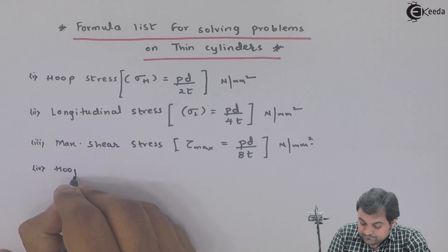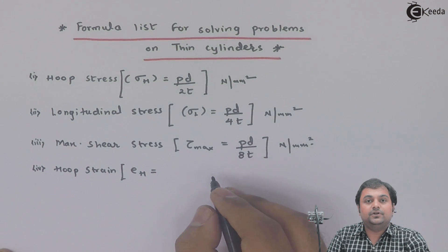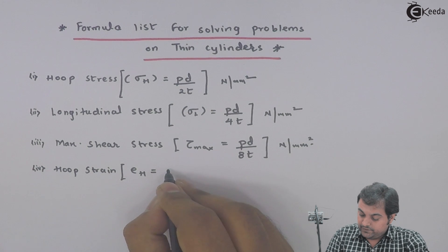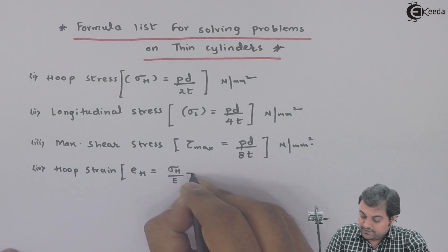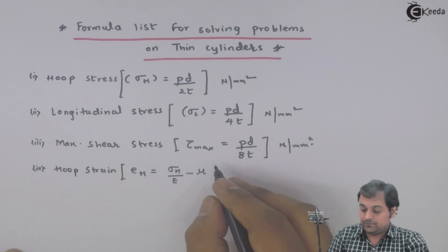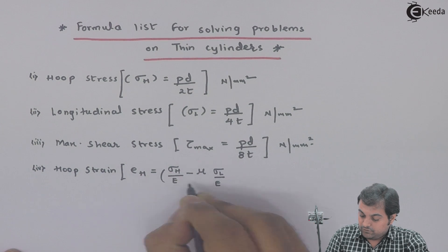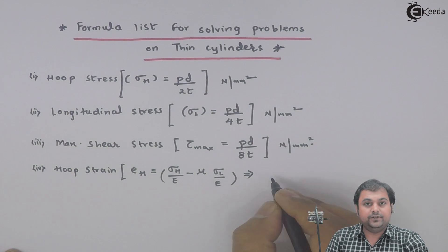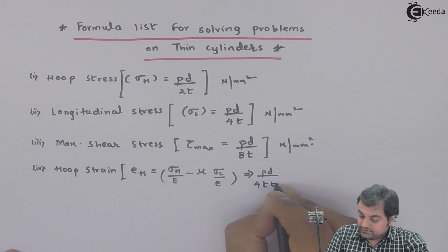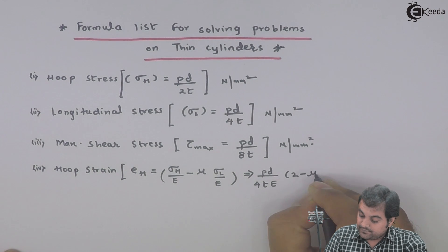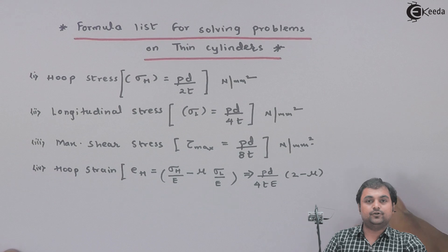Apart from these formulas, we have hoop strain. Hoop strain, E suffix H, will be equal to hoop stress divided by Young's modulus, minus mu (Poisson's ratio) into longitudinal stress upon Young's modulus. This whole formula can be reduced to: PD upon 4tE into (2 minus mu). So this is the hoop strain formula.